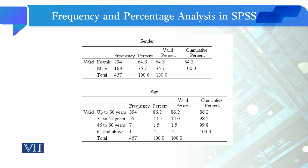اس طریقے سے آپ کا descriptive analysis جس میں frequency and percentages count کرنی ہیں وہ SPSS میں ہو جاتا ہے۔ یہاں APA format کے مطابق show ہو رہا ہے کیونکہ میں نے کچھ commands set کی ہوئی ہیں۔ جب اسے Word file میں present کرنا ہو تو valid percentage کا tab ہٹائیں گے، یہ دونوں percentages ختم کریں گے، اور variable کا نام title میں لے آئیں گے۔